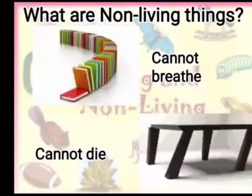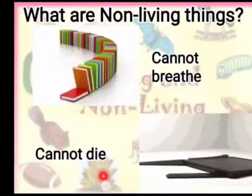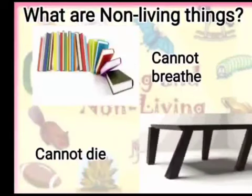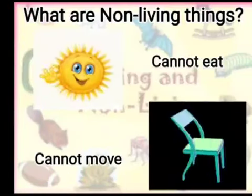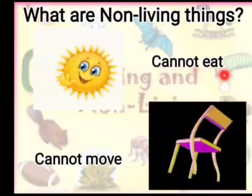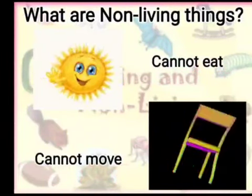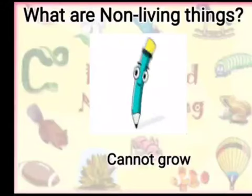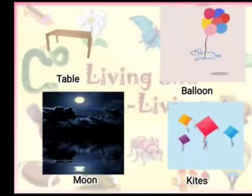Now we will come to know about non-living things. Non-living things are the things that cannot breathe, that cannot die — they can be replaced or repaired if broken, but we cannot say that they have died. They cannot feel, they cannot reproduce, they cannot eat because they don't require energy to do any work. Non-living things cannot move on their own — they need the help of living things to move. Non-living things cannot grow. Examples include table, balloon, moon, kites, etc.